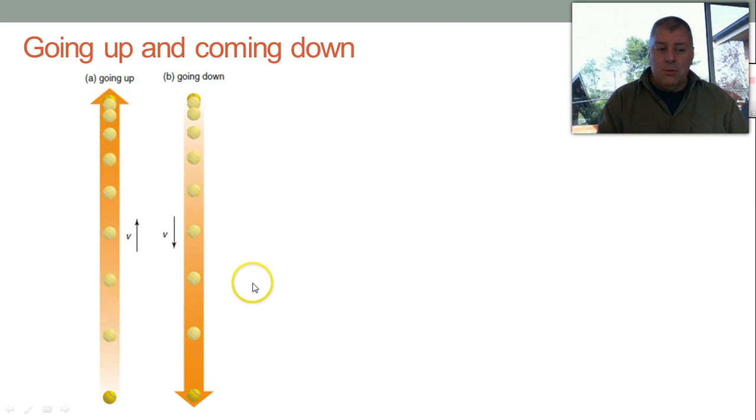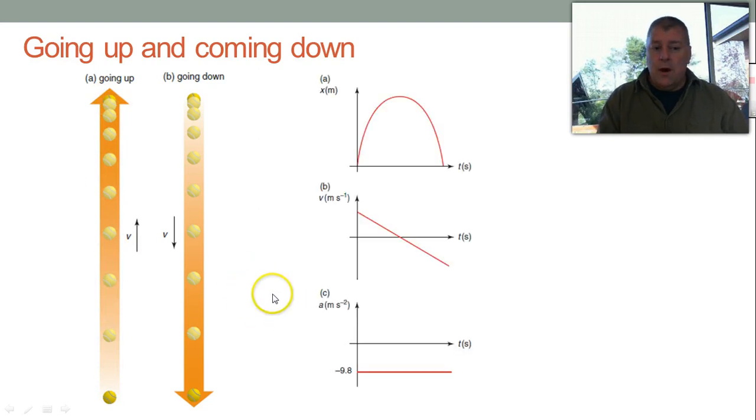One way of visualizing that is to look at the motion graphs for going up and coming down. As it goes up, remember this is displacement versus time, so the slope here would represent the velocity. It starts with the maximum velocity, and then the velocity shallows down to zero, and then you get a negative velocity as it comes down.